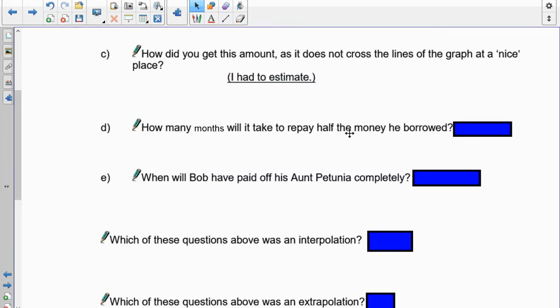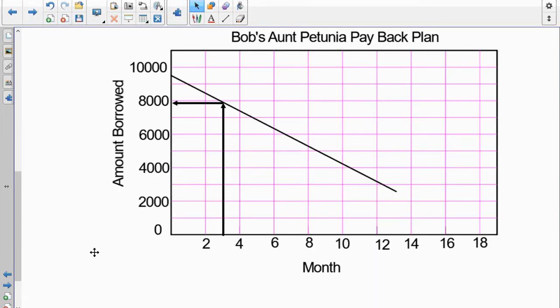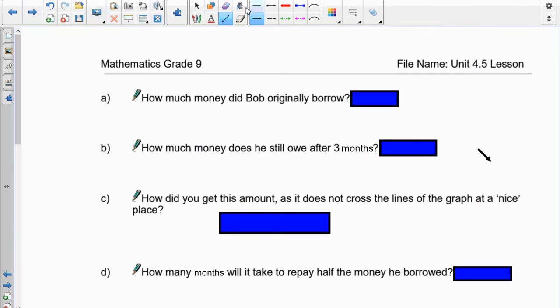How many months will it take to repay half the money he borrowed? To find this out, the first thing we need to do is to find out how much half of what he borrowed is. He borrowed 9,500 and half of that is 4,750. Let's go to 4,750. That's 5,000. 4,750 is right there. Go over and then come down. So, we're looking at right around, there's the 9 month halfway. So, we're talking about just under 9 months to do that.